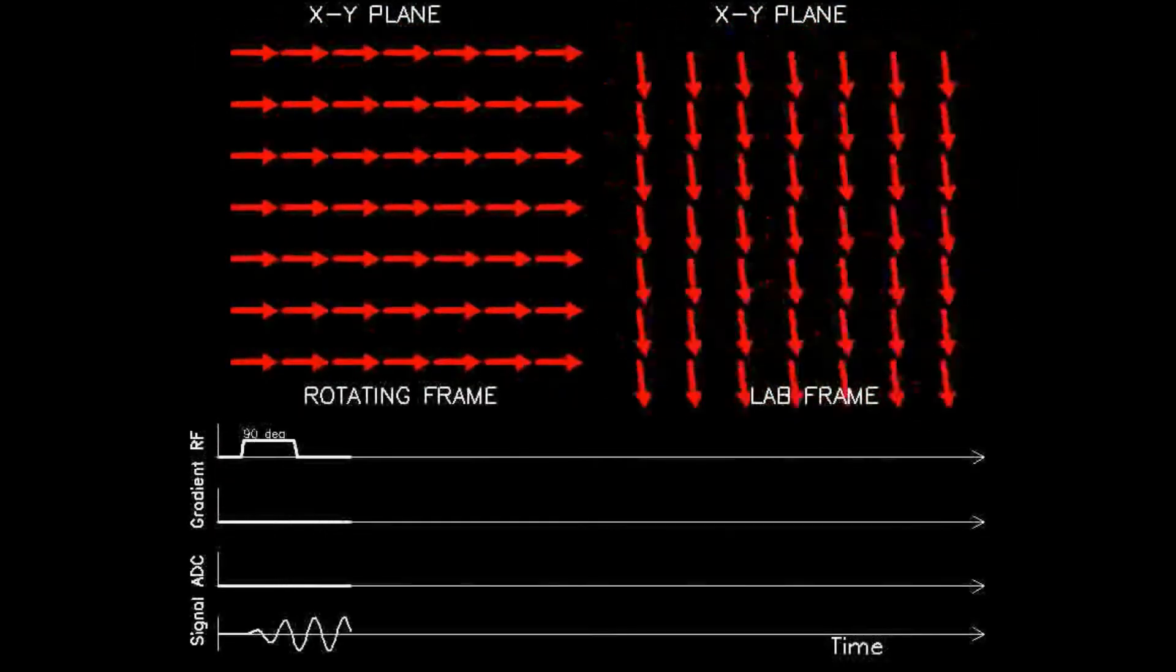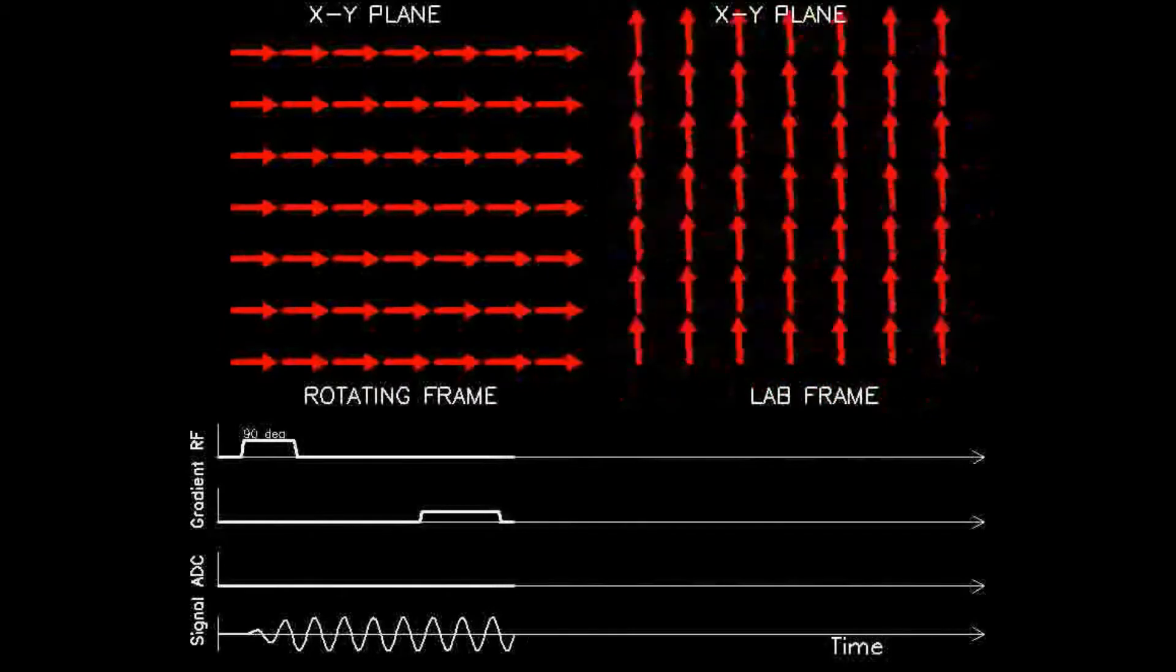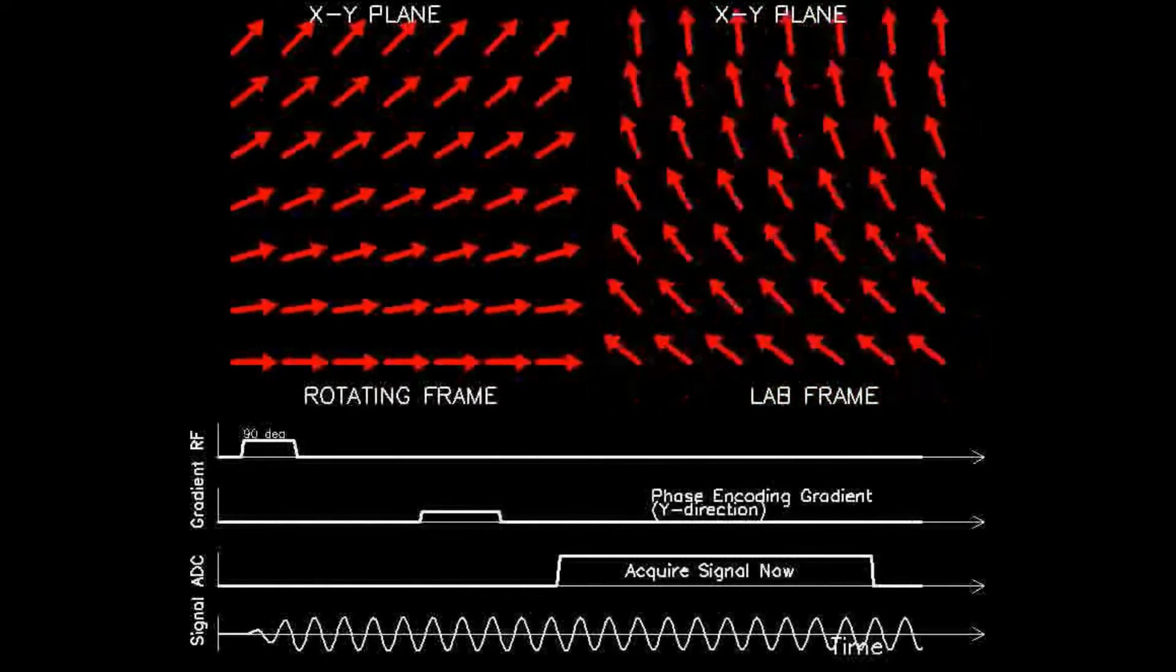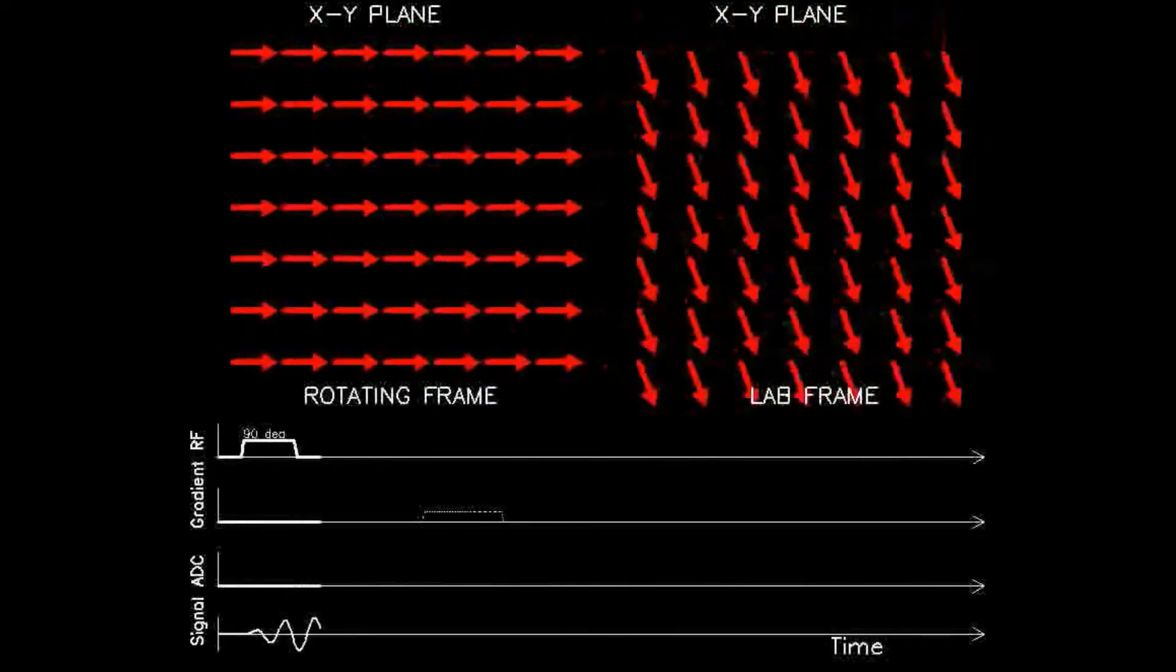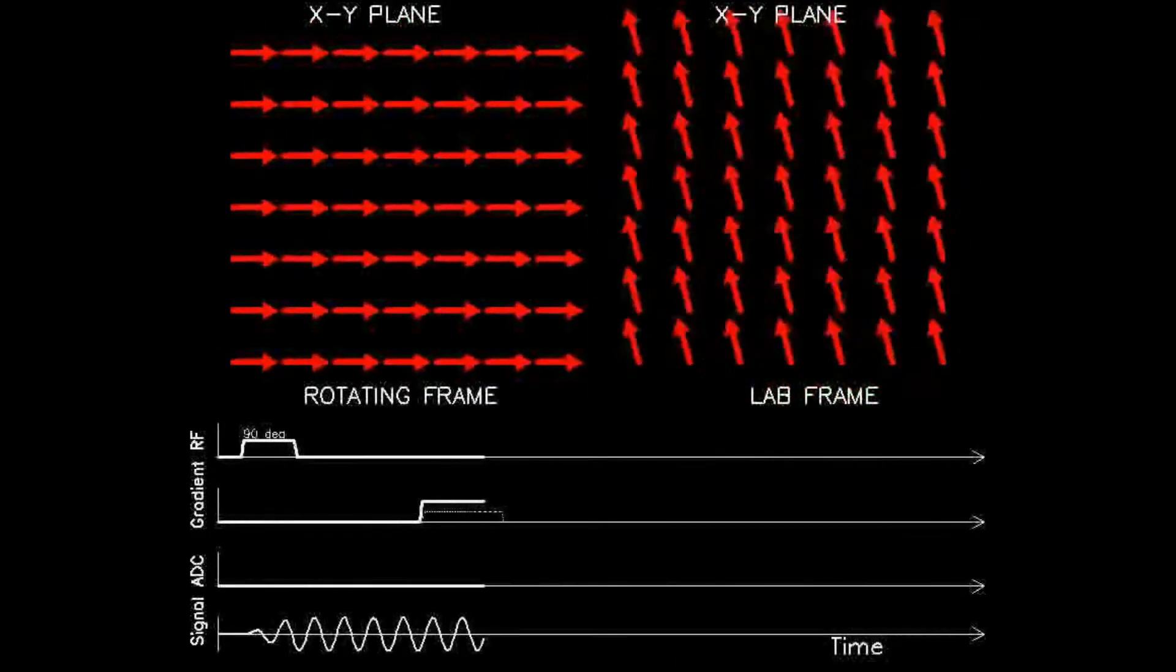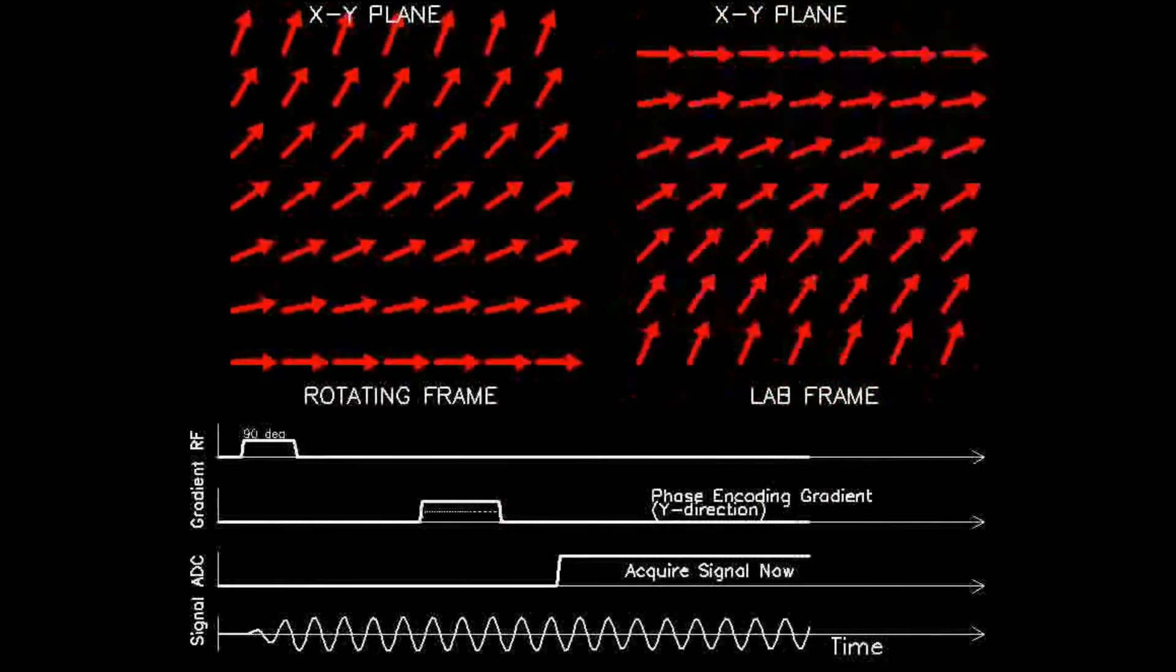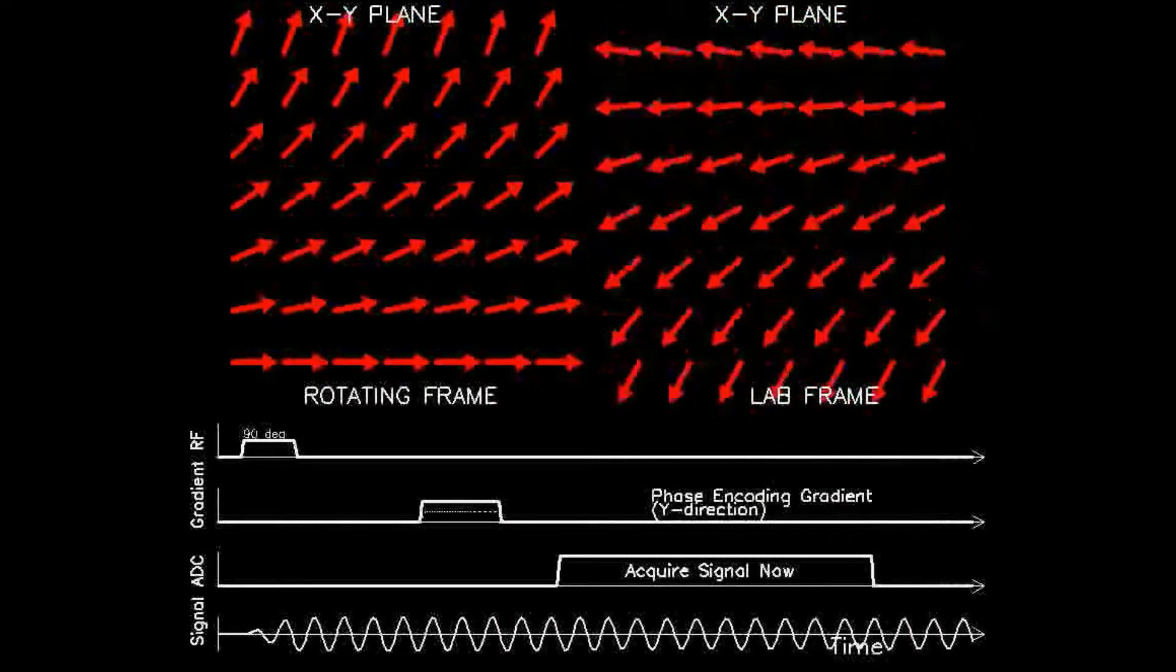The amount of new phase is a known quantity with two important features. One, all spins along a given row dephase the same amount. And two, each row has a unique amount of dephasing, the variation of which depends on the magnitude and duration of the impressed gradient.